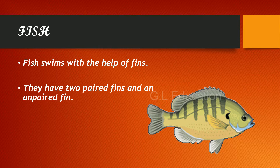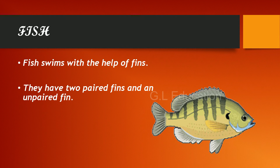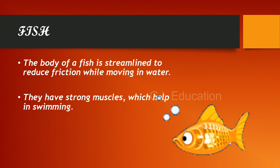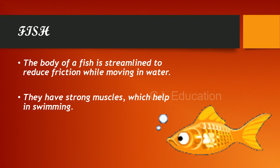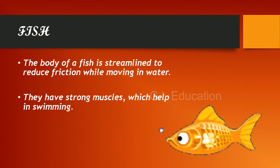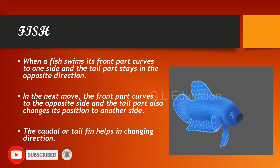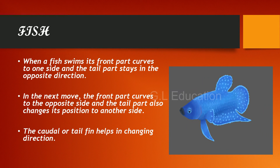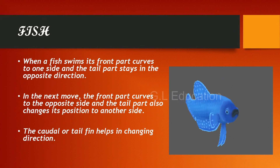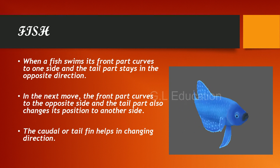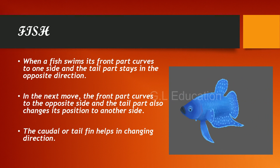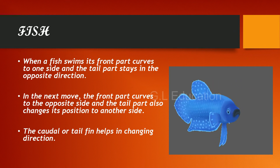Fish swim with the help of fins. They have two paired fins and an unpaired fin. The body of a fish is streamlined to reduce friction while moving in water. They have strong muscles which help in swimming. When a fish swims, its front part curves to one side and the tail part stays in the opposite direction. In the next move, the front curves to the opposite side and the tail also changes position. The caudal or tail fin helps in changing direction.